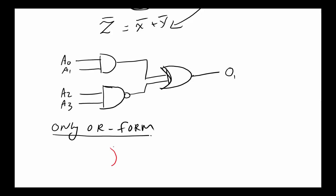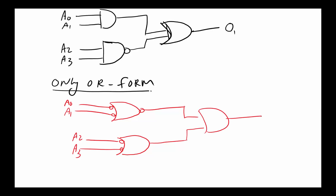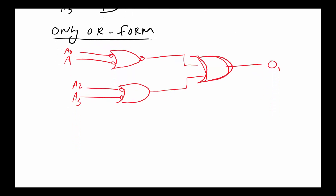For the first AND gate, I want to make it an OR, so I draw it as an OR and complement everywhere that wasn't complemented — giving me A0-NOT and A1-NOT coming in. For the second AND gate I do the same, turning it into an OR with A2-NOT and A3-NOT. The final OR gate is already in OR form, so I don't have to change it. That's the OR form of the circuit.